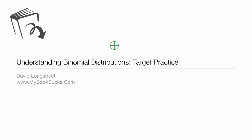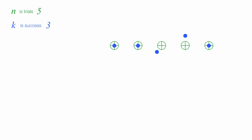In this tutorial, I'm going to talk about binomial distributions. I'm going to use target practice as an example. Imagine you have five targets — five trials — and what is the probability of hitting three of these targets, knowing that the historical success rate is one-third and historical failure rate is two-thirds?